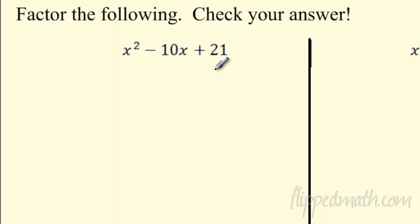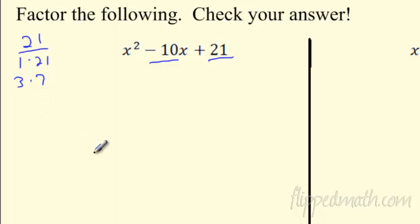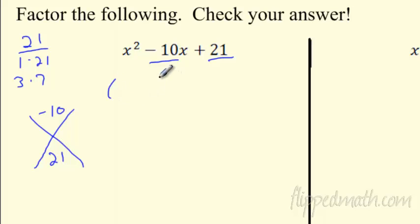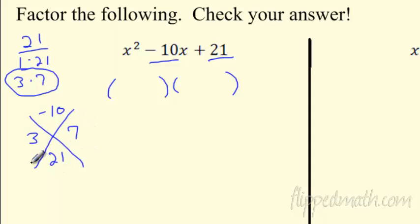Let's make it a little more difficult. This one has a positive and negative sign. The general rule: what multiplies to this number adds or subtracts to this number. What multiplies to 21? Well, 1×21 and 3×7. I need what multiplies to 21 and adds or subtracts to negative 10. It's 3 and 7. But we have to think about signs: negative 3 times negative 7 is 21, and negative 3 plus negative 7 is negative 10. So it's x minus 3 times x minus 7.